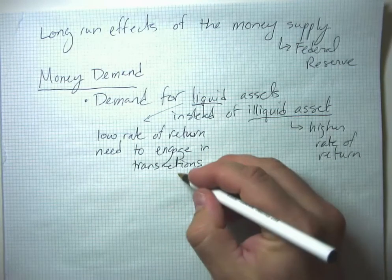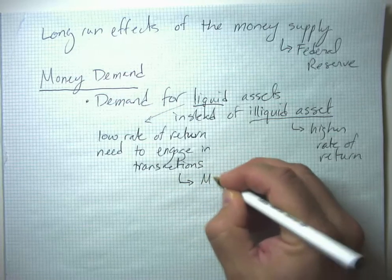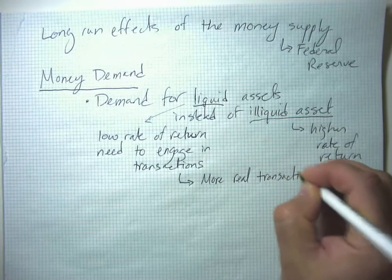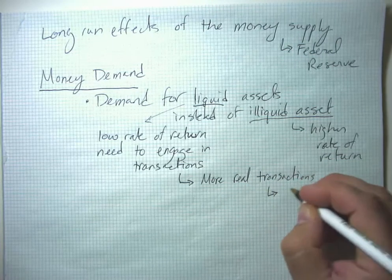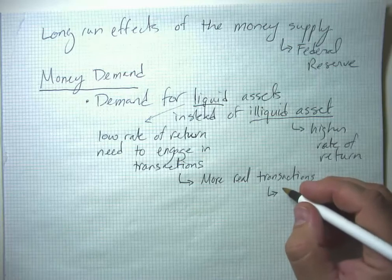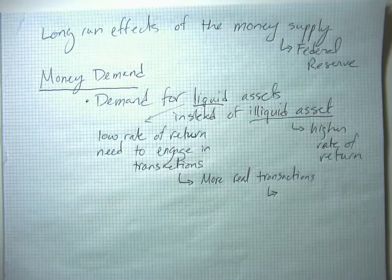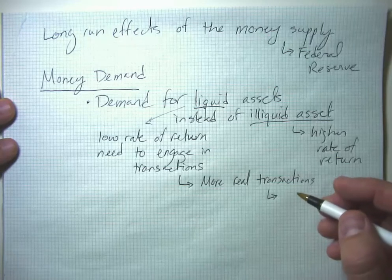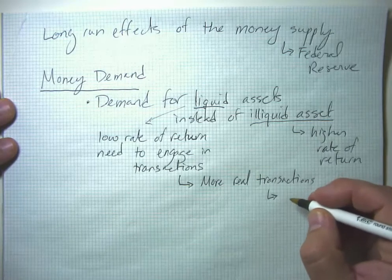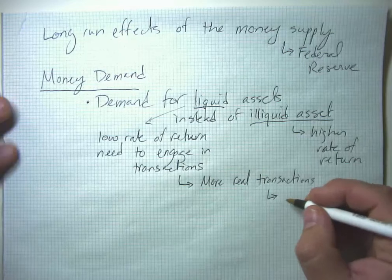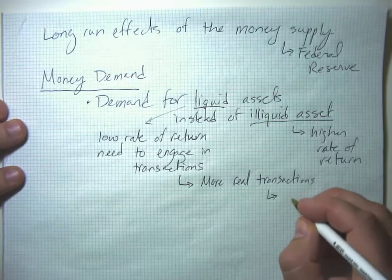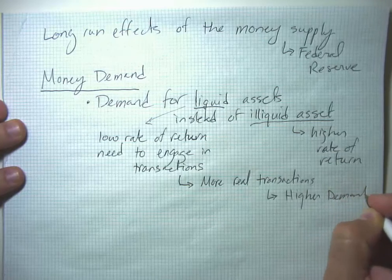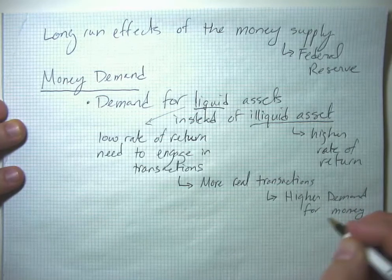Notice that the more real transactions you engage in — the more gallons of milk you buy every month — the higher your demand for money. You'll need more money in your checking account to get through the month if you have a high level of earning and spending than someone with a lower level. People typically keep one or two months' worth of money in their checking account, and anything over that they put in a savings account or some kind of investment. So more real transactions means a higher demand for money.